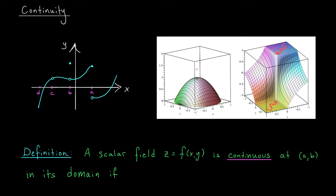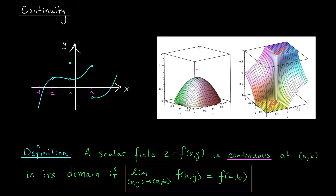Here's our formal definition for continuity of a scalar field. We'll say that a scalar field z equals f(x, y) is continuous at some input (a, b) in its domain — meaning the function is definitely defined at that point — if the limit as (x, y) approaches (a, b) of f(x, y) exists and is equal to f(a, b). Now let's check out some examples.